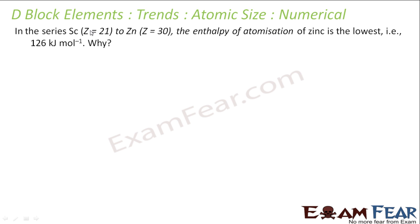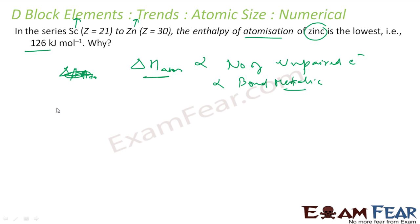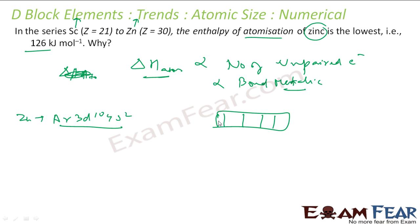The next question: in the series scandium to zinc, the enthalpy of atomization of zinc is the lowest. Why? The enthalpy of atomization depends on the number of unpaired electrons, because these unpaired electrons form the metallic bonds. For zinc, the electronic configuration is AR, 3D10, 4S2. In the D orbital: 1, 2, 3, 4, 5, 6, 7, 8, 9, 10 — there is no unpaired electron. And in 4S2 also there is no unpaired electron. So if there is no unpaired electron, the bonding will be weak, and thus zinc has the lowest enthalpy of atomization.